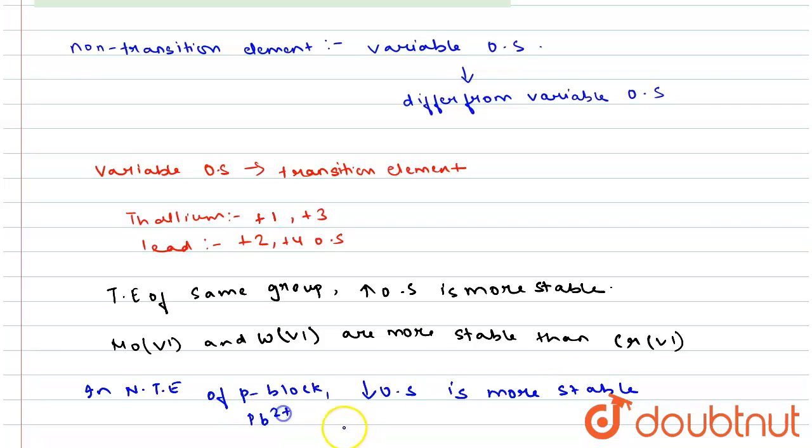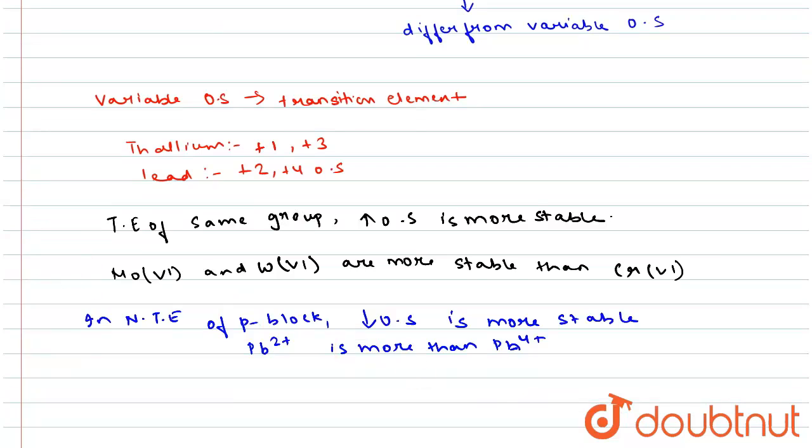This is due to inert pair effect. For example, Pb²⁺ is more stable than Pb⁴⁺. So this is what is asked to explain in the question, hence explained.